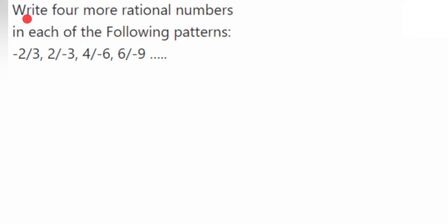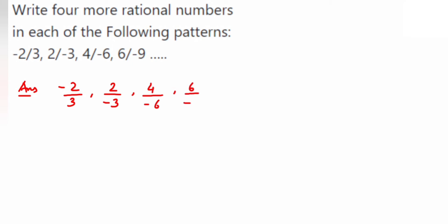Here we have a question on rational numbers. The question says: write four more rational numbers in each of the following pattern. So they are given a pattern, and we have to understand the pattern and write four more rational numbers. The pattern is: the first number is -2/3, the second number is 2/(-3), then 4/(-6), and 6/(-9).